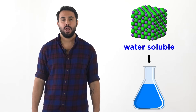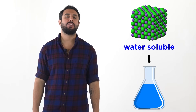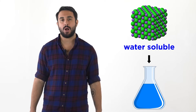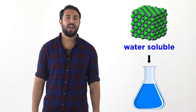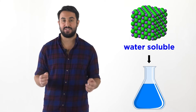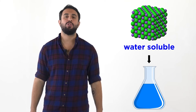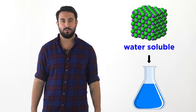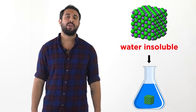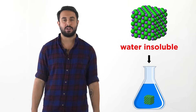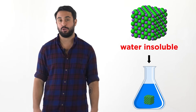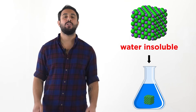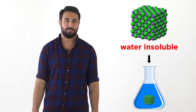Professor Dave and Chegg here. When we first discussed solubility, we learned that some ionic compounds are water-soluble and will completely disperse in solution, due to the ion-dipole interactions they will make with water molecules. We also mentioned that other ionic compounds are water-insoluble and will not dissolve at all, remaining completely in the solid phase.